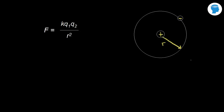Going back to the electron, let's say it's going around counterclockwise, so the velocity at this point is tangent to the circle — that's the direction of the velocity vector. The electron has mass m and will feel a force attracted toward the nucleus. Opposite charges attract, so this negatively charged electron feels a force toward the center of the circle — that's the centripetal force, which in this case is the electric force.